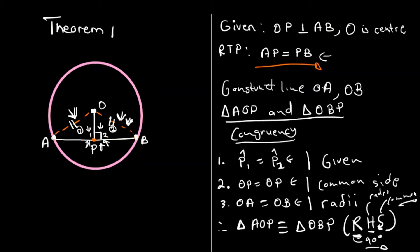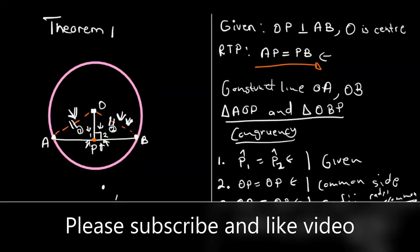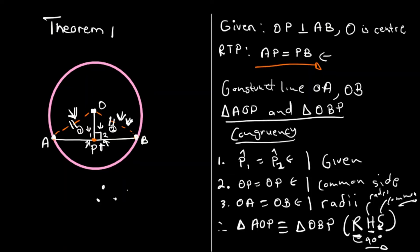Therefore we can conclude by saying AP is equal to PB, because triangle AOP is congruent to triangle OBP by the Right Hypotenuse Side (RHS) rule.